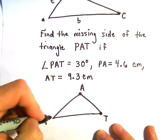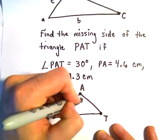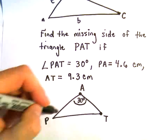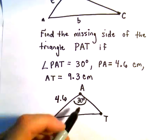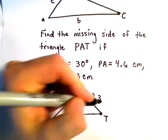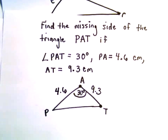We're told that the angle PAT is 30 degrees, so we're given that angle. P to A has length 4.6 centimeters, and A to T has length 9.3 centimeters. Now we're simply going to use the law of cosines to figure out everything else that's missing.